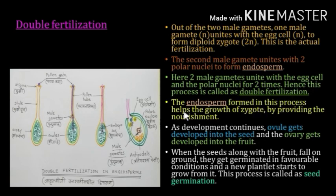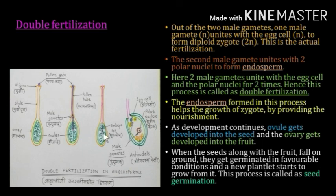The endosperm is formed by the fusion of polar nuclei and the male gamete, and this endosperm provides nourishment to the developing seed. As development continues, the ovule gets developed into a seed and the entire ovary develops into a fruit. When the seeds along with the fruit fall from the tree, they germinate under favorable conditions and a new plantlet starts to grow. This process is called seed germination, and after germination a new plant grows from the seed.